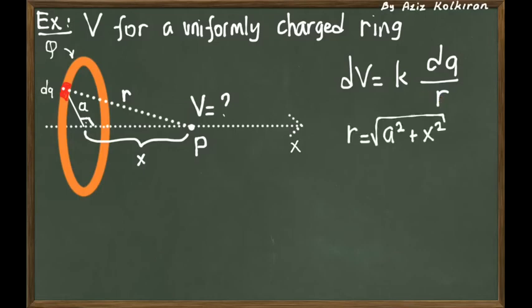r is equal to the square root of a squared plus x squared from the Pythagorean theorem. If you write down this integral to find the total potential, because we add all dq's over the rim of the ring.